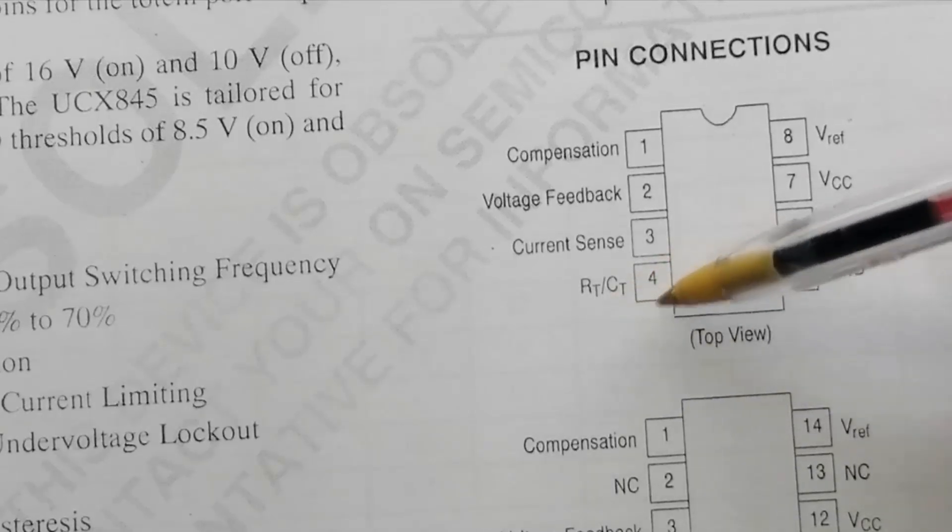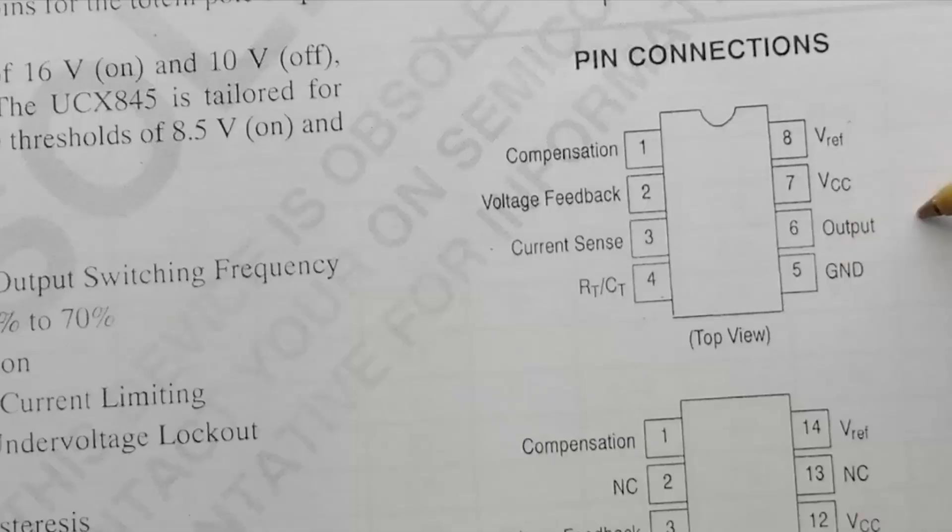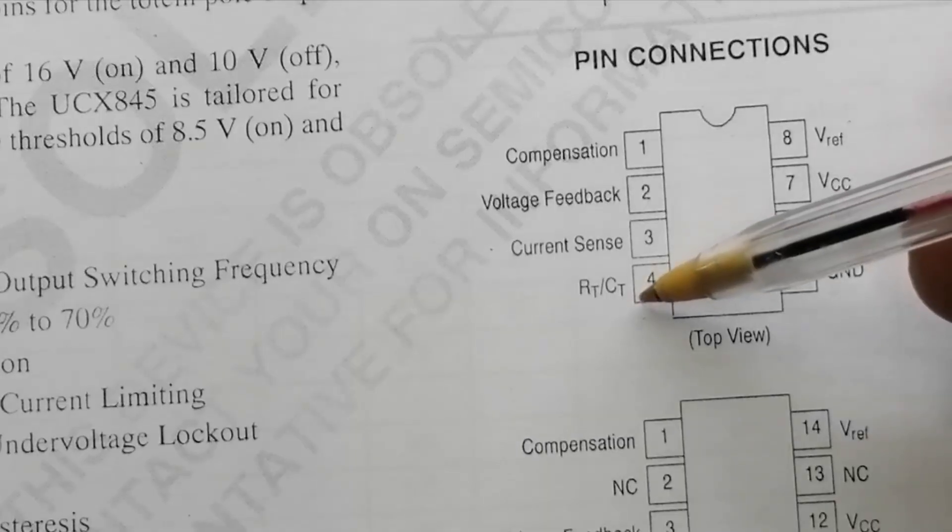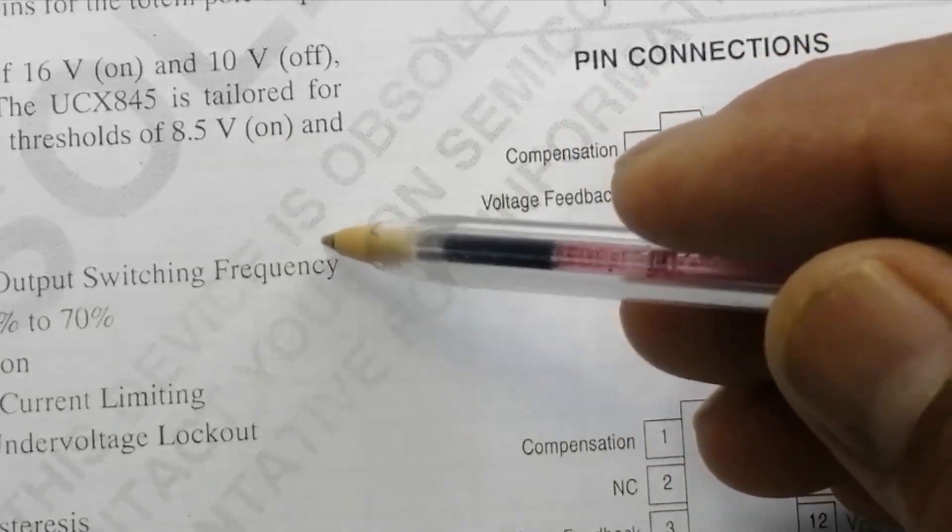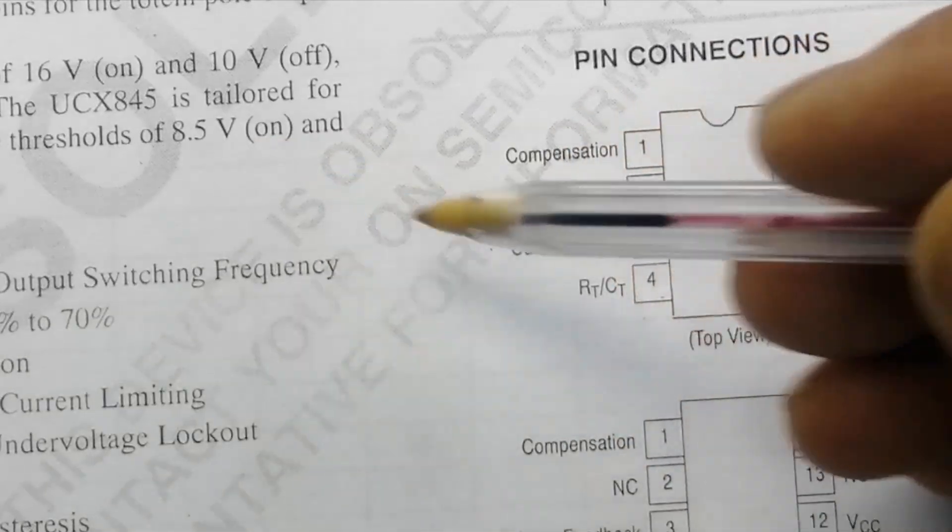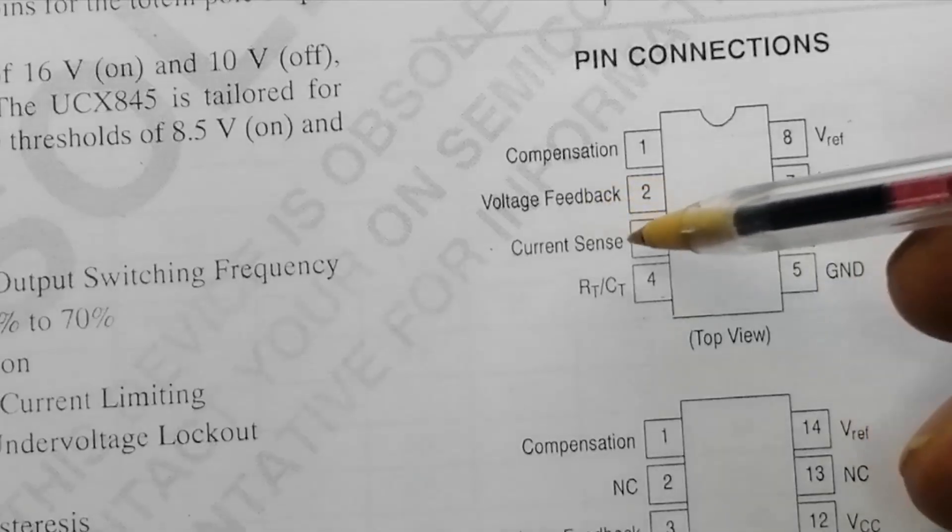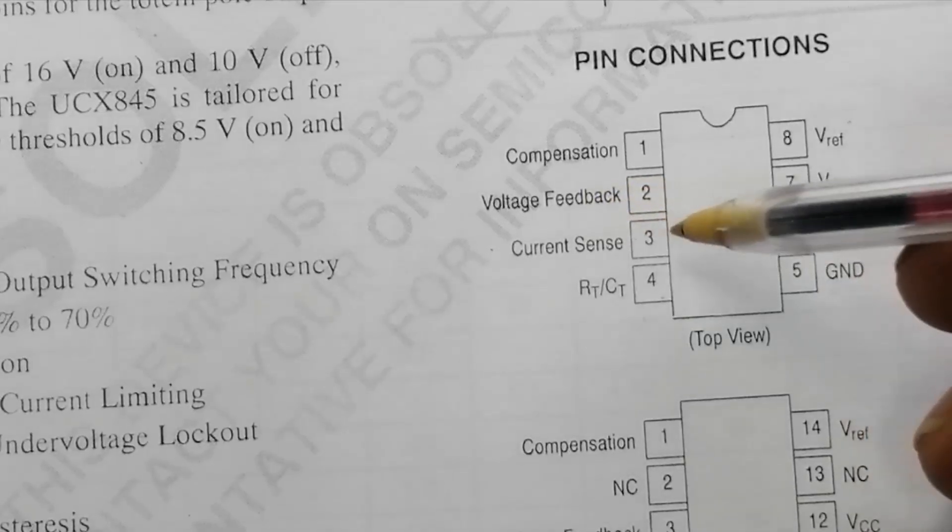RTCT: here resistor and capacitor are calculated to adjust the frequency. It is current sense. A portion from the primary of the transformer, the transformer current is taken and applied to pin number three.